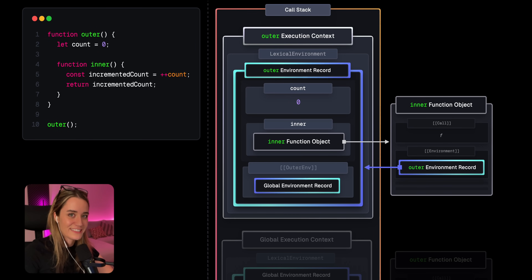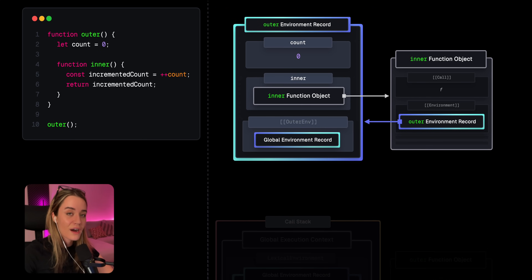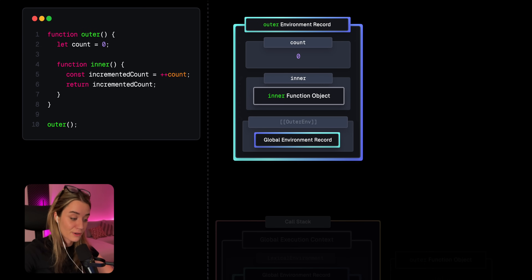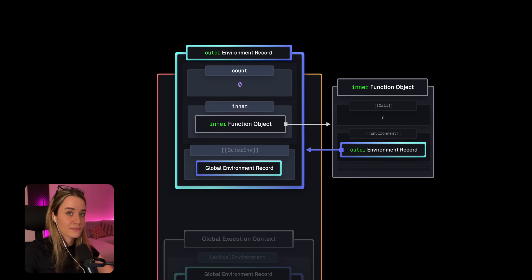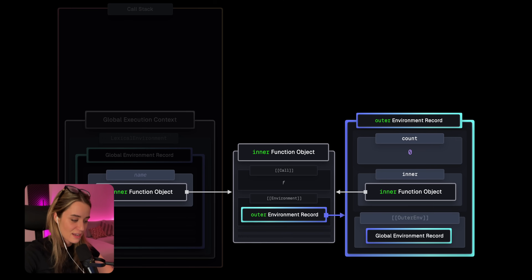Just having this reference isn't enough, because whenever outer finishes executing, there are no other references to the inner function object. So it just gets garbage collected — we cannot reference it from anywhere within our code. This then again leaves that environment record without any references, so it also gets garbage collected. What we need to do is retain a reference to the inner function object from outside of the outer function — so we need a variable on the global context that references this function object.